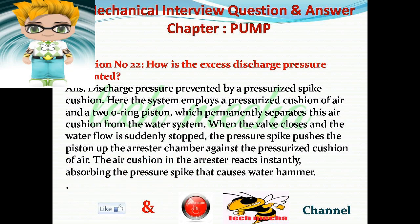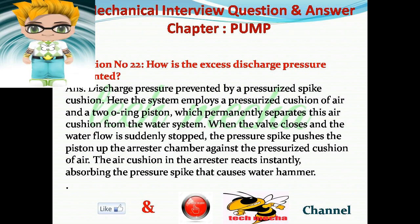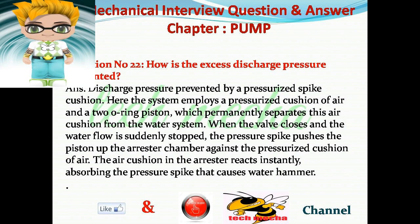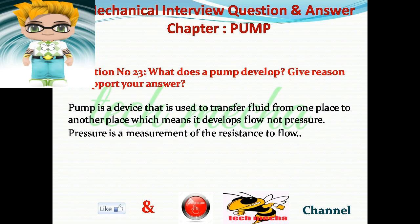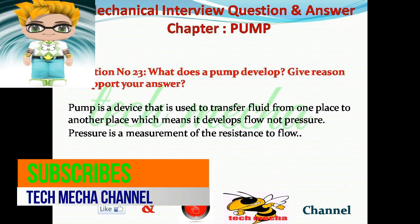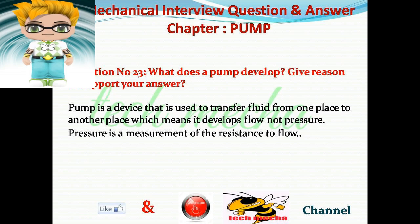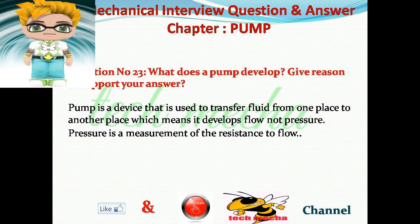Question number 22: How is excess discharge pressure prevented? Answer: Discharge pressure is prevented by a pressurized spike cushion. The system employs a pressurized cushion of air in a two O-ring piston, which permanently separates the air cushion from the water system. When the valve closes and water flow is suddenly stopped, the pressure spike pushes the piston up the arrestor chamber. Question number 23: What does a pump develop? Answer: A pump is a device used to transfer fluid from one place to another — it develops flow, not pressure. Pressure is a measurement of the resistance to flow.